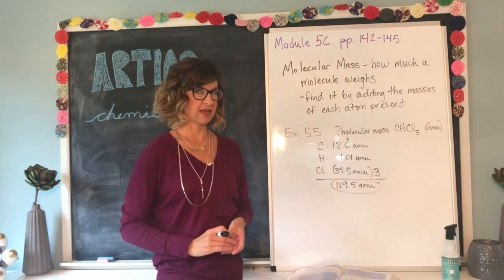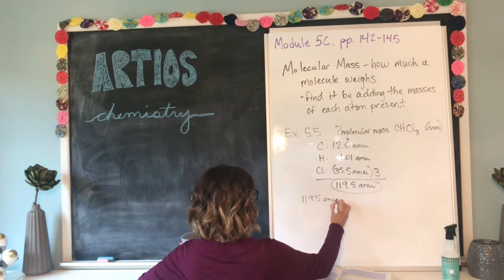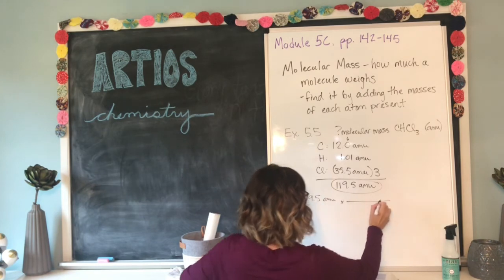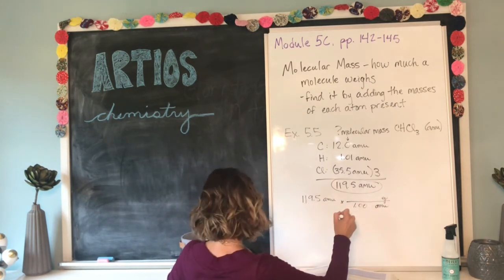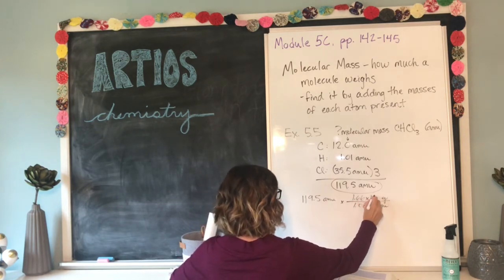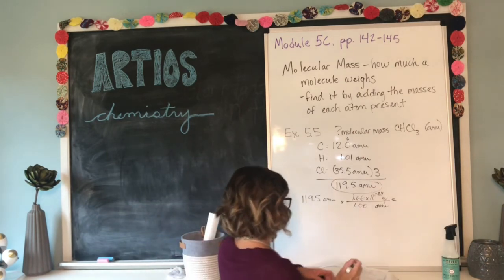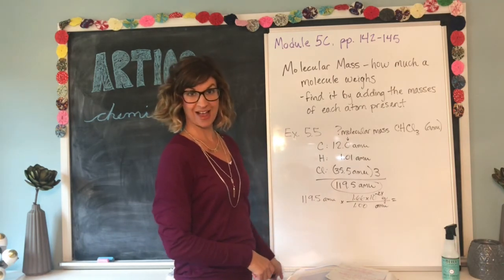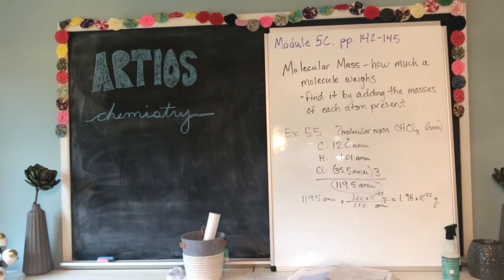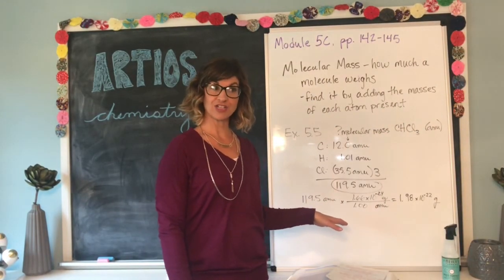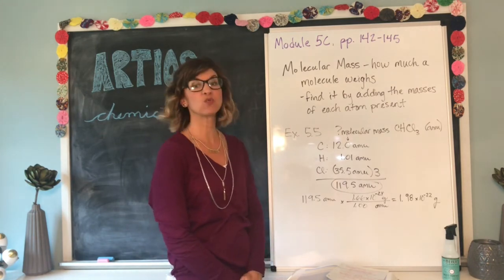Now, what if your book had asked you to find that in grams? Let's do the conversion just for fun. We would have 119.5 AMUs and multiply it by that ratio we learned: 1.00 AMU is equal to 1.66 times 10 to the negative 24th grams. AMUs go on the bottom to cancel, grams go on top. My daughter did that calculation for me, and the answer comes out to be 1.98 times 10 to the negative 22 grams.